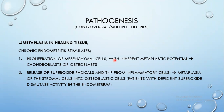During healing after an abortion, if there is retained tissue and chronic endometritis develops, there is too much proliferation of mesenchymal cells. These mesenchymal cells have an inherent metaplastic potential — they can turn into chondroblasts or osteoblasts. When you have chondroblasts and osteoblasts, they will produce bone, and you end up with bone within the endometrium.